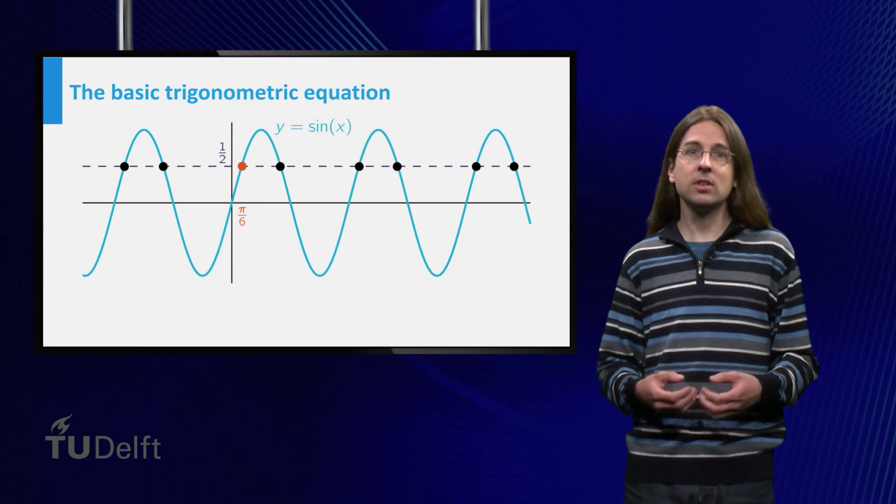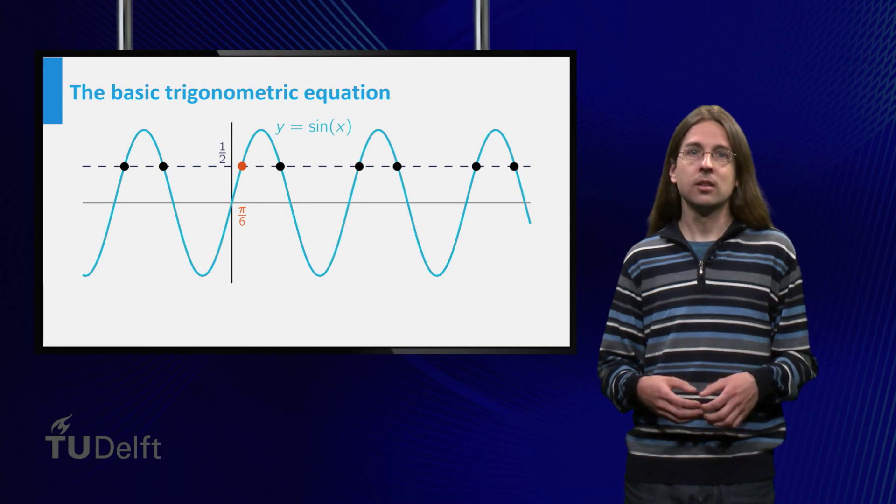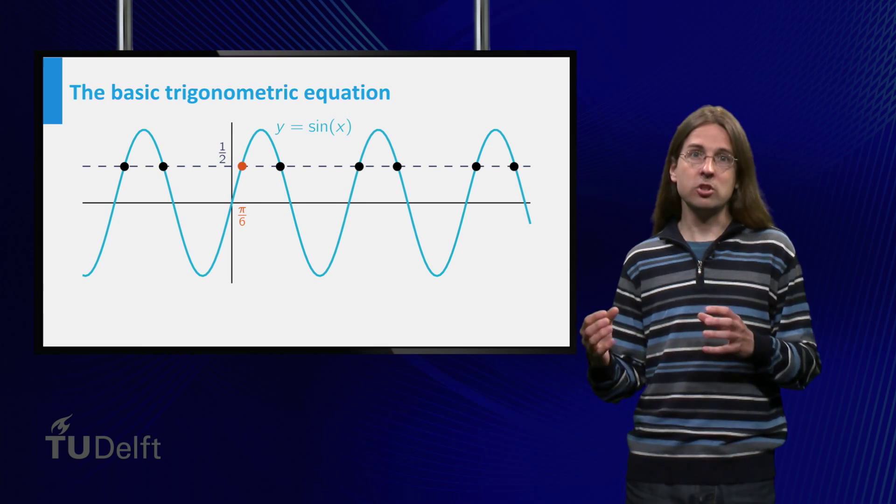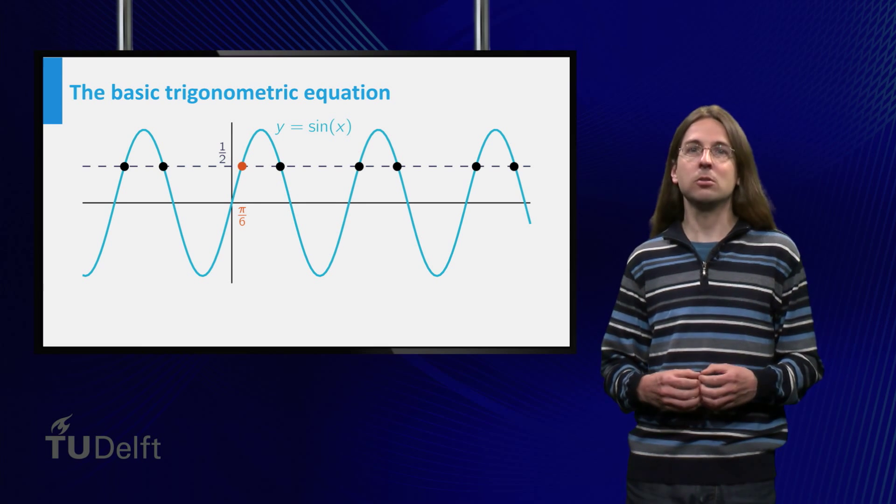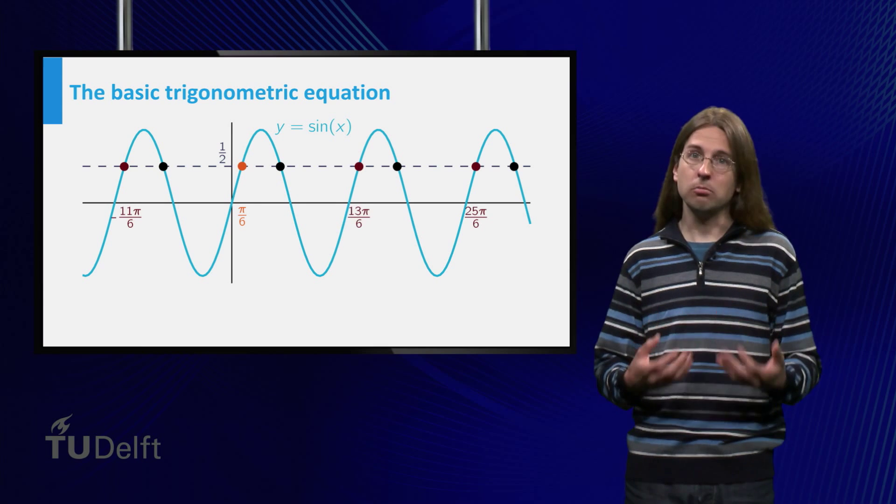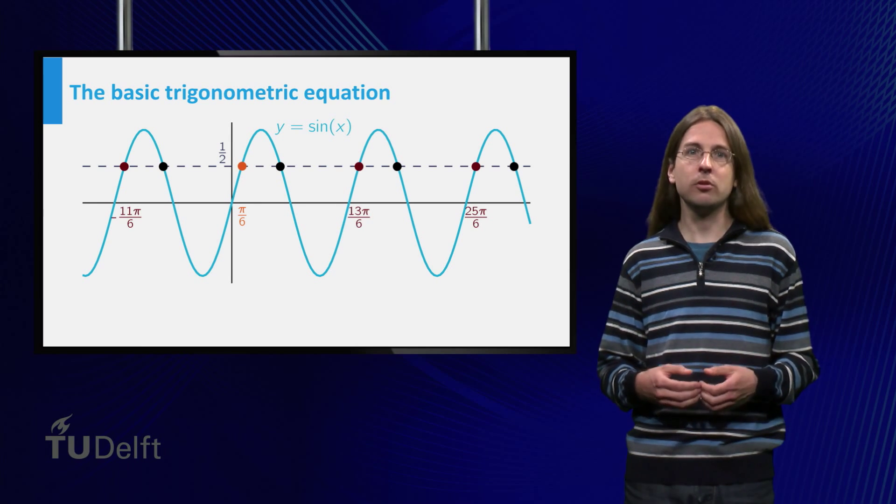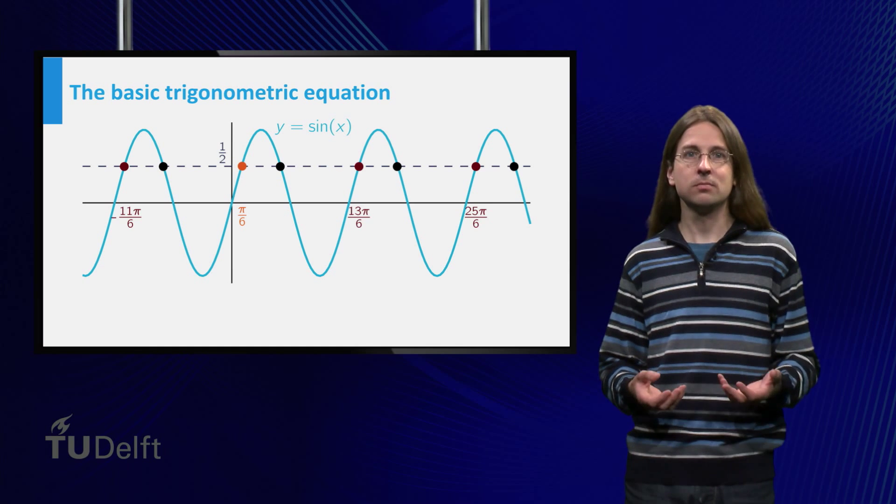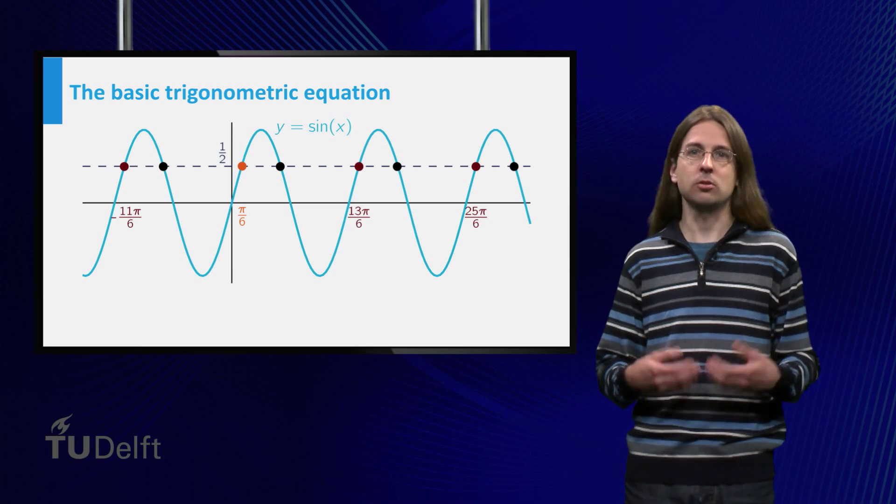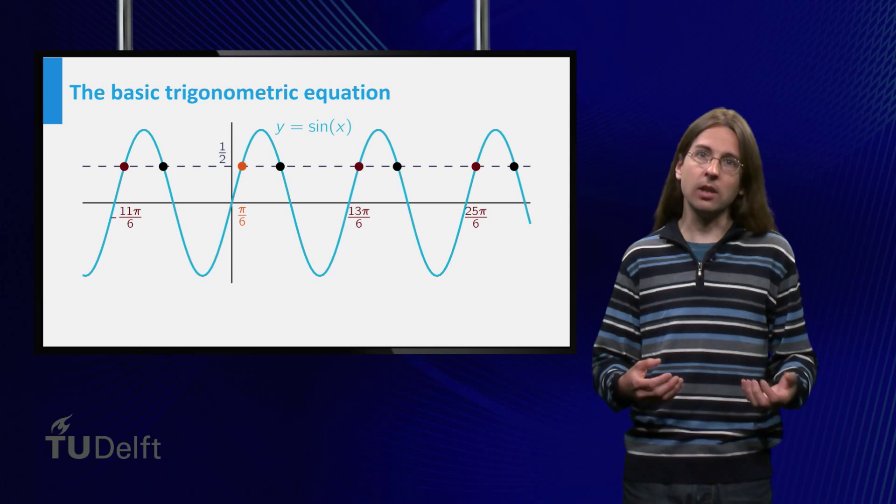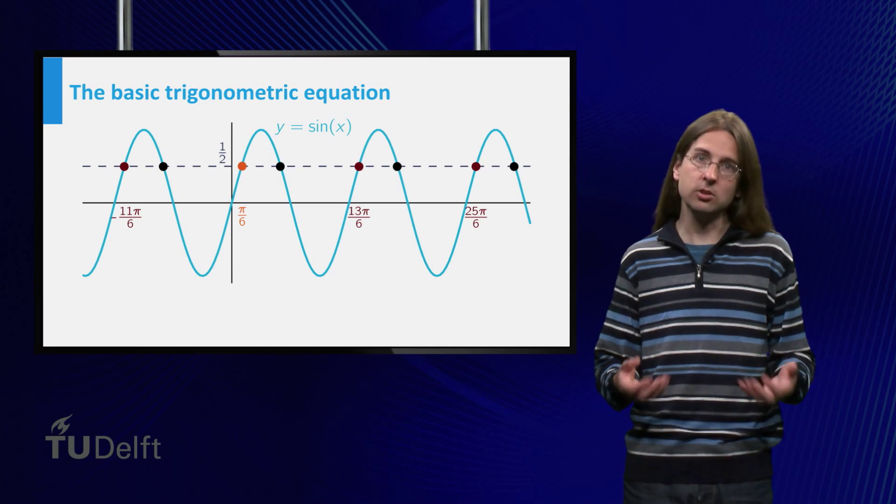The simplest property is that the sine is periodic. So the graph remains the same if we shift it a distance 2π horizontally. The red points of intersection are obtained by adding a multiple of 2π to the original solution. So we have 13π/6 and 25π/6 and to the left -11π/6 and so on.